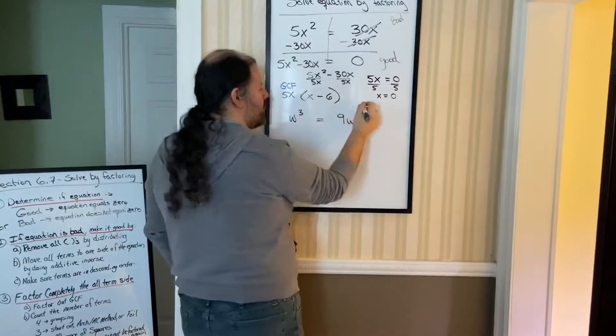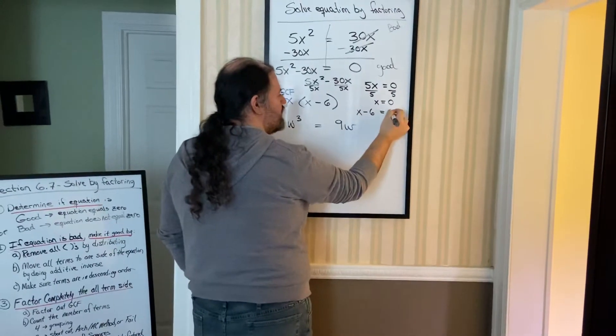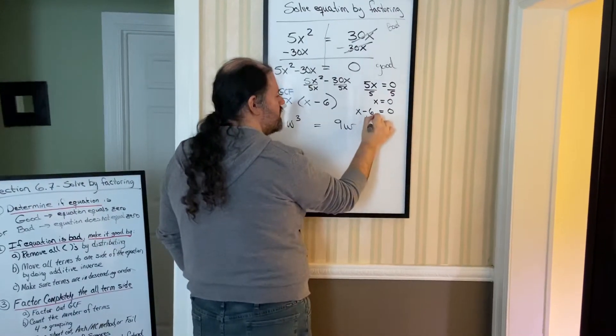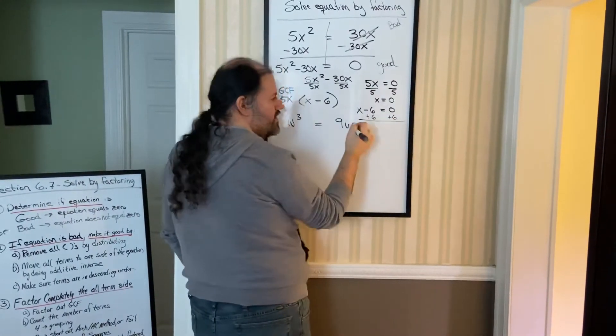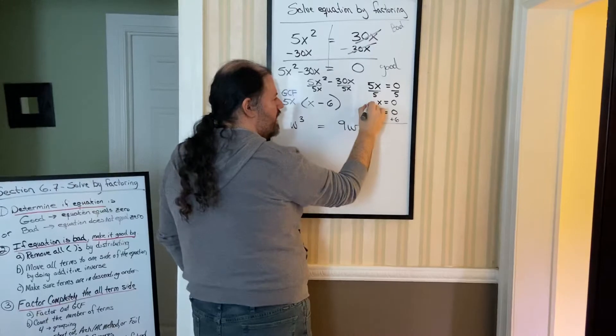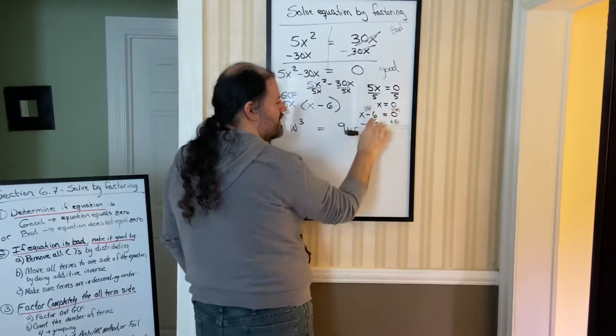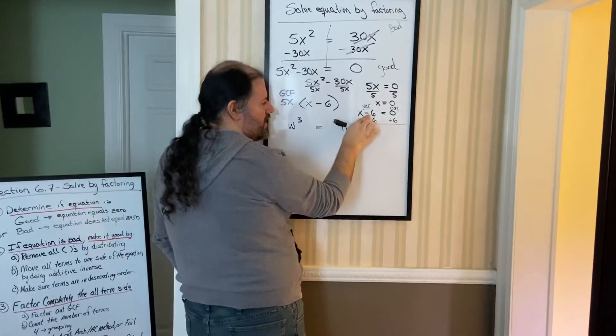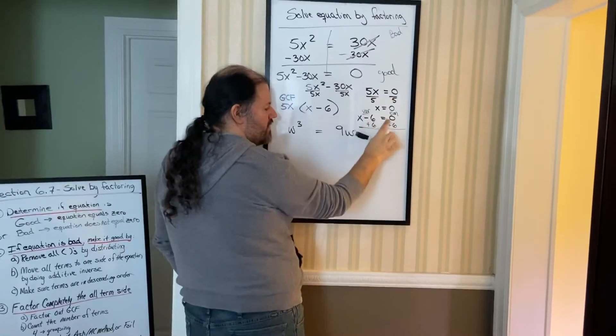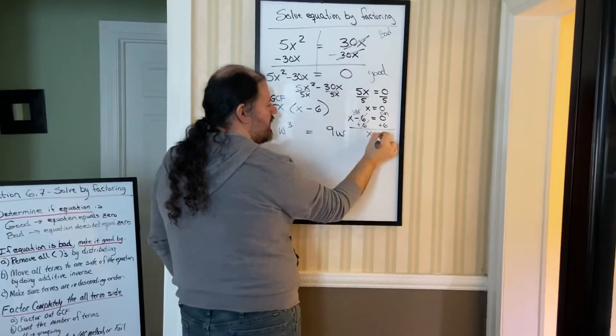And then take the other factor, which happens to be the binomial, set that equal to 0. We know we got to move the 6 over. Why do I need to move the 6 over? Remember back in the day where we talked about variables on one side, constants on the other? This 6 is a constant, so we got to move it. Opposite of a negative would be positive. Whatever I do to the left, you have to do to the right. They cancel out, so we get x equals 6.